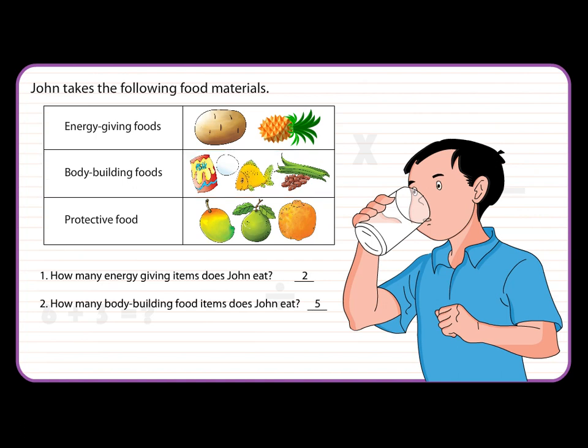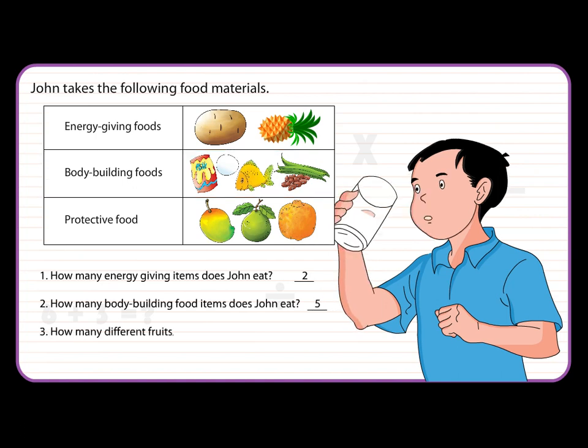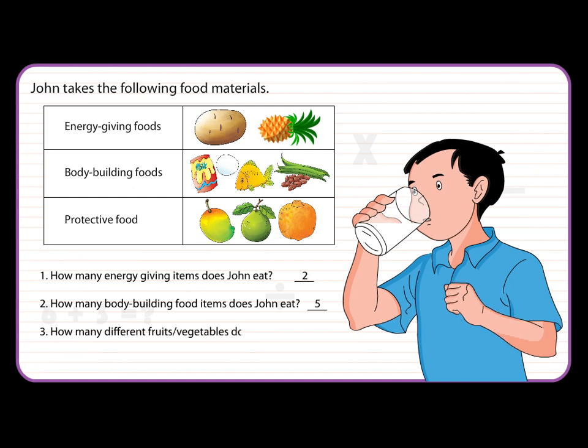How many different fruits and vegetables does John eat? The answer is 10.